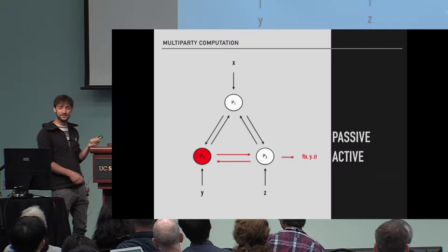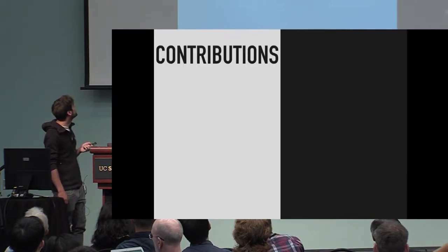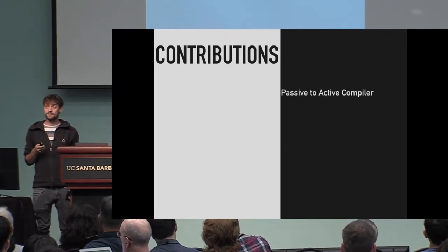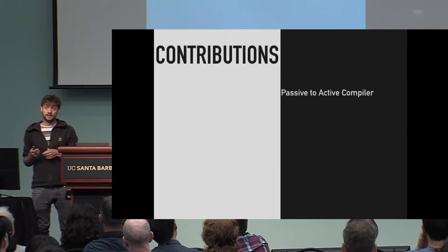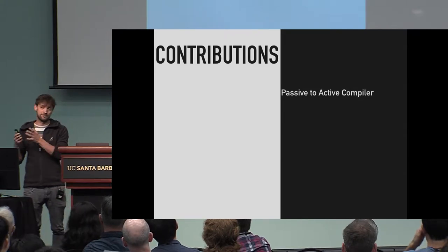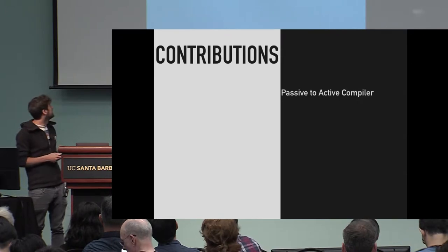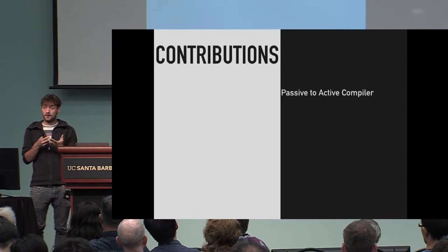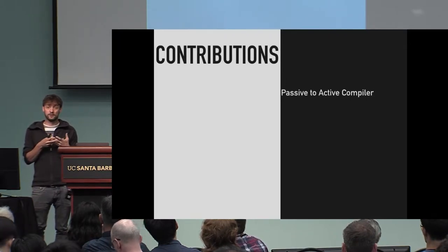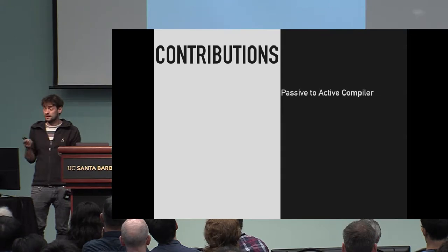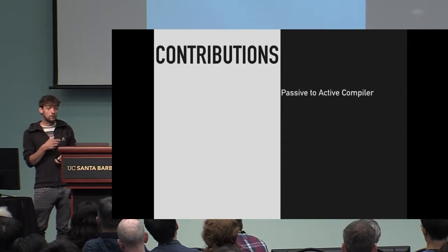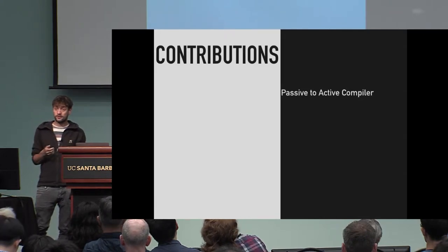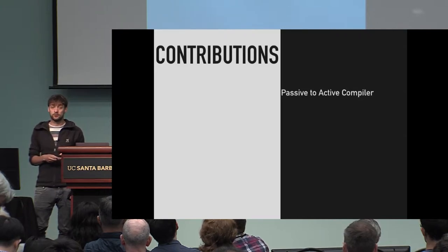This is what we do in this talk. We have several contributions. The first one is we show a generic way of taking any passively secure protocol and transforming it into an actively secure protocol for some slightly worse corruption threshold. The compiler doesn't look at the specific way the semi-honestly secure protocol works — if you fulfill the required security properties, you can plug it in and get an actively secure protocol. The compiler is information-theoretically secure, which means if you plug in an information-theoretically secure passive protocol, you get an information-theoretically secure actively secure protocol.